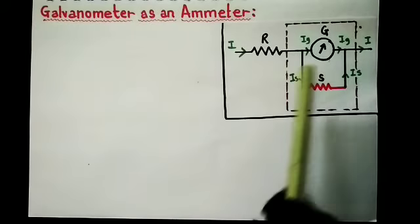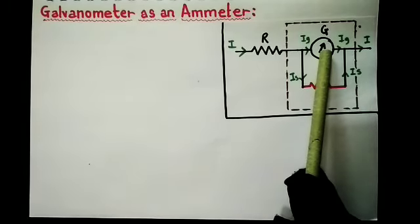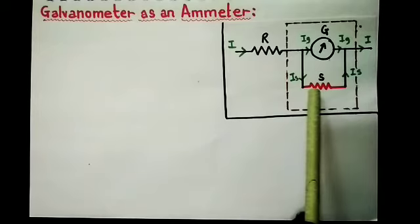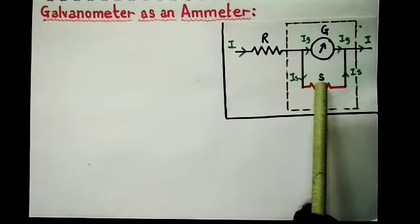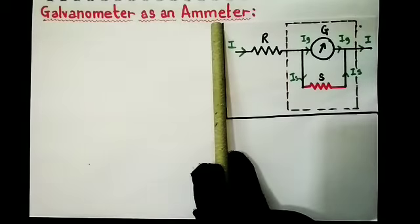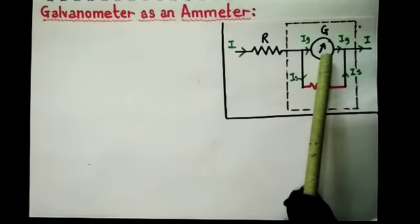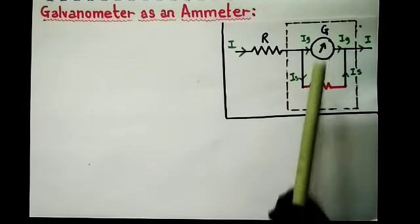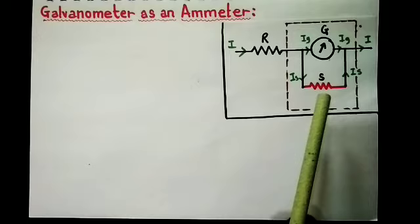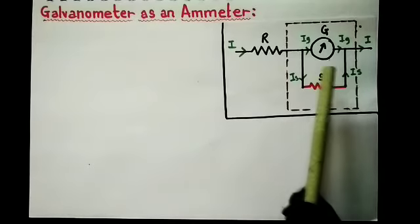A galvanometer can be converted into an ammeter, which is a current-measuring instrument. The galvanometer is connected in series with the resistance through which current is to be measured. When larger current is to be measured, a low resistance is connected in parallel with the moving coil galvanometer — this is called a shunt. The shunt resistance bypasses most of the current and allows a smaller current to flow through the moving coil galvanometer. The shunt resistance reduces the effective resistance of the ammeter, increases the range of the instrument, and provides an alternate path for excess current, which protects the galvanometer from damage.